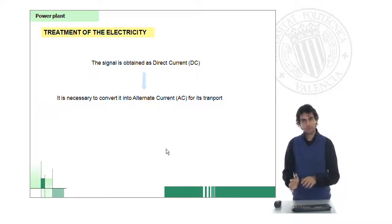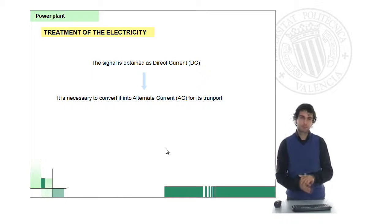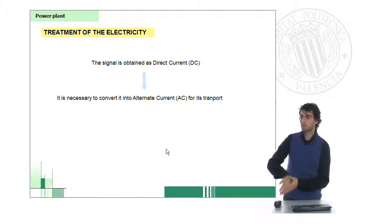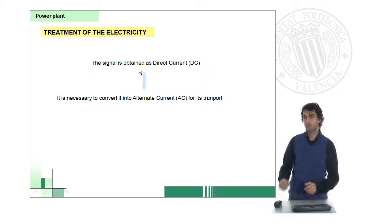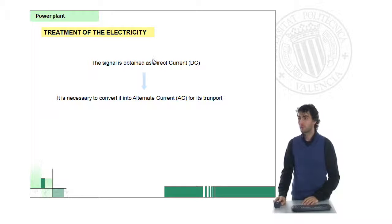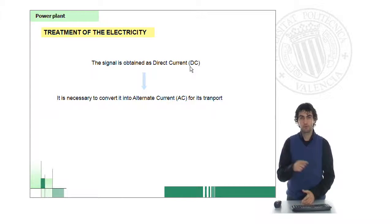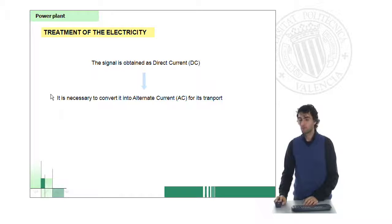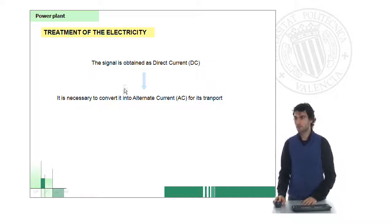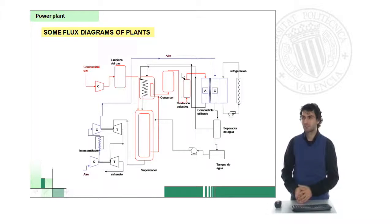All were about previous operations considering the fuel cell, but then we will have also to take into account the posterior applications, which are basically the treatment of the electricity that we obtain, which will be in the form of direct current because it will be just a very simple flow of electrons. In order to transport and storage this electricity, as you might know, it is important that we use alternate current. So we will need to have a conversion in our plant before to get rid of the electricity.